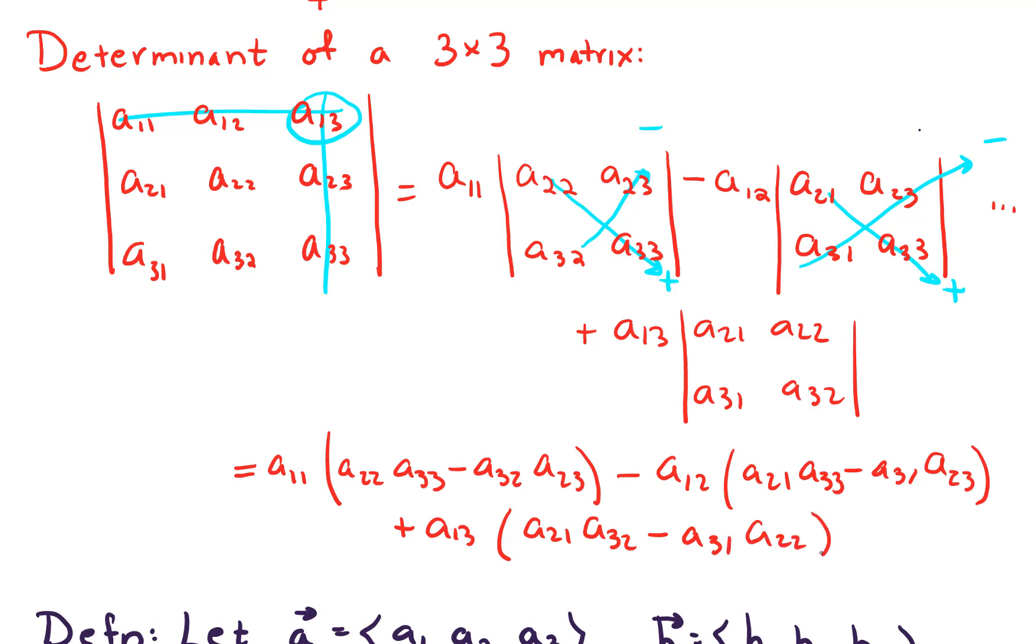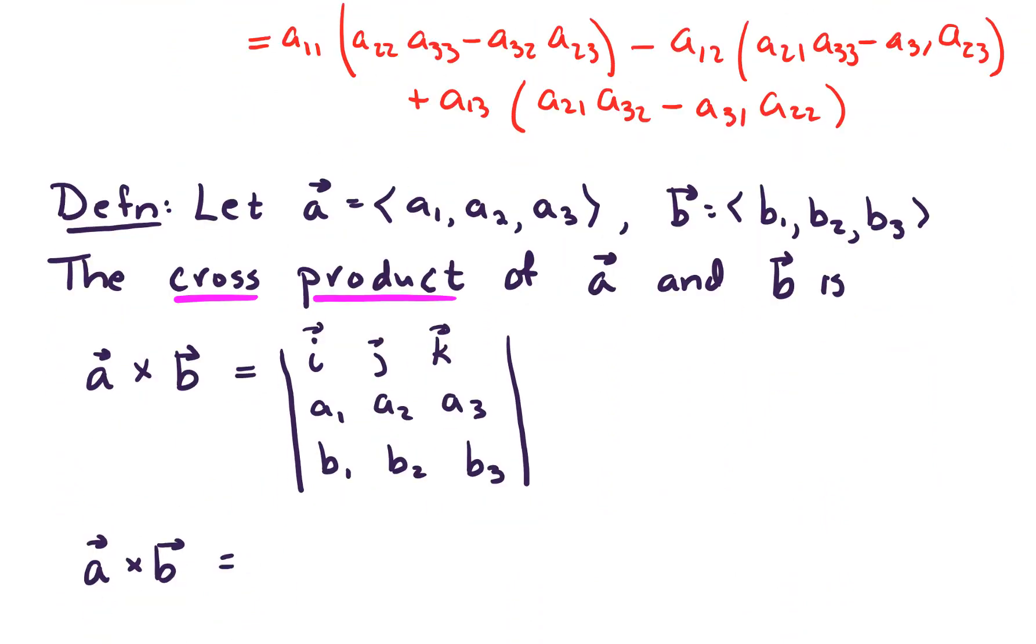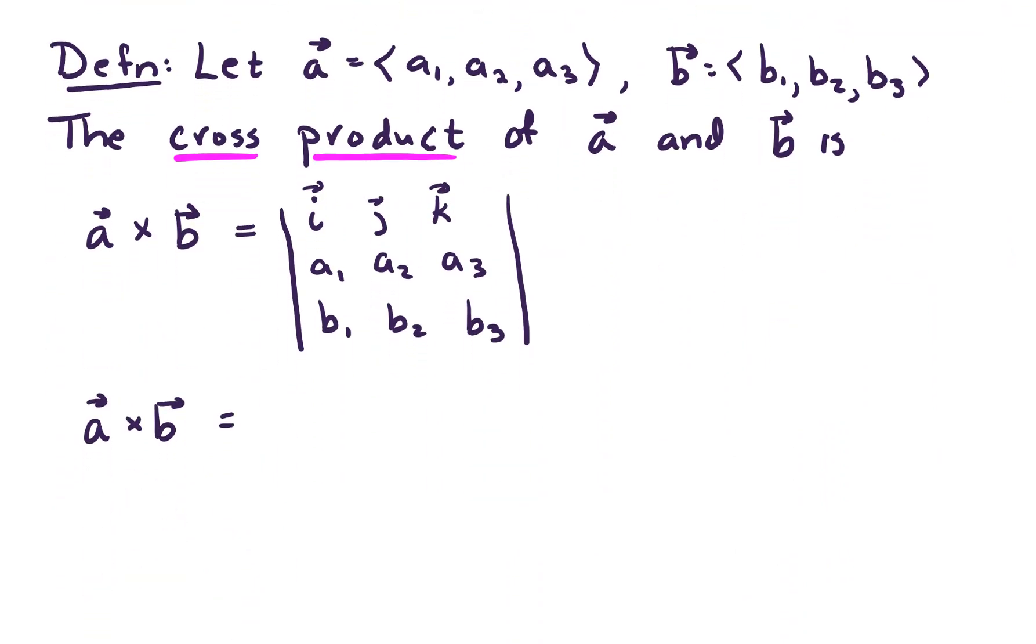Okay, so why is that useful? Well, the determinant of a 3 by 3 matrix is useful because that's how we define our cross product. So let's take a look at that. So let A be a vector with three components, A1, A2, and A3. Let vector B be a vector with three components, B1, B2, and B3. The cross product of A and B is A cross B, and it's given as the determinant of a 3 by 3 matrix. The first row is I, J, K.